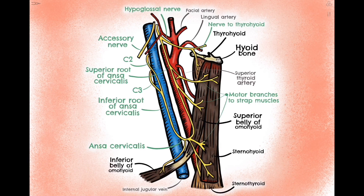Now let's have a quick look at the inferior root. As you can see, this descends down in front of the internal jugular vein and is made up of fibers from C2 and C3. These descend down and join with the superior root, forming the loop of Ansa Cervicalis, and its branches go on to supply three muscles as well. Because it's the inferior loop, it supplies the inferior belly of omohyoid and the inferior portions of the sternothyroid and sternohyoid muscles.